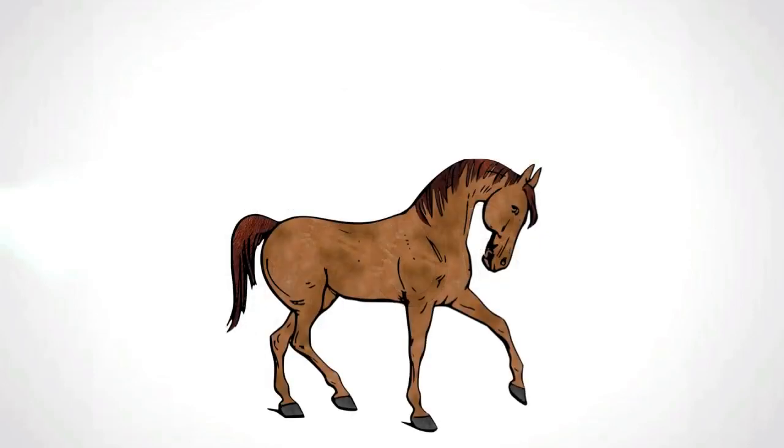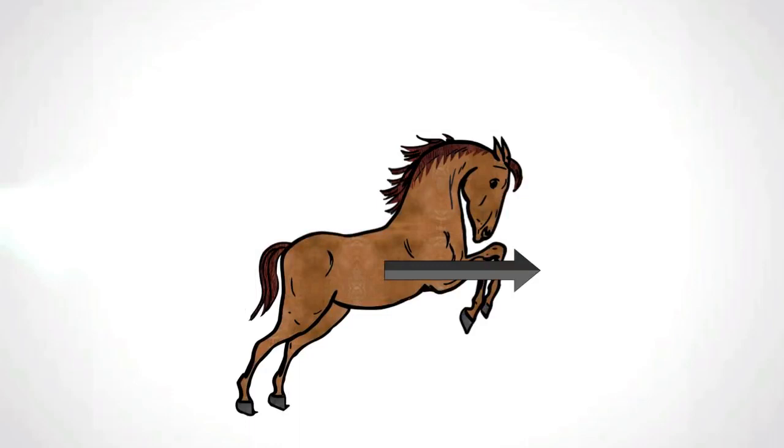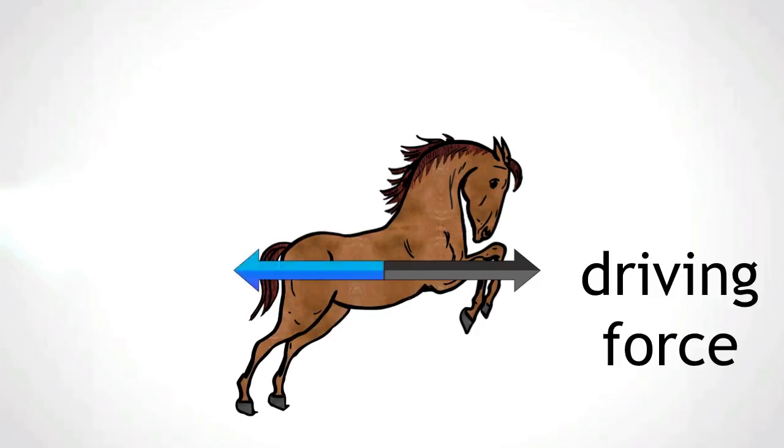There are other forces acting on the horse. The horse is moving forward, and therefore there must be a driving force from the horse's legs. The driving force, though, is opposed by forces trying to slow the horse down.